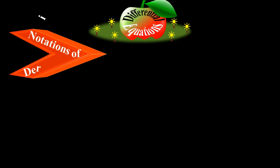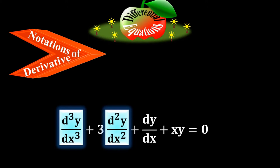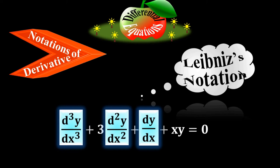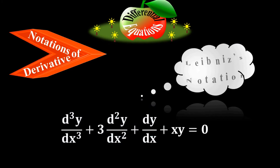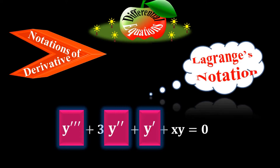Let me show different notations and their names for derivative terms in a differential equation. In the equation d³y/dx³ + 3(d²y/dx²) + dy/dx + xy = 0, the notations d³y/dx³, d²y/dx², and dy/dx are called Leibniz notations.